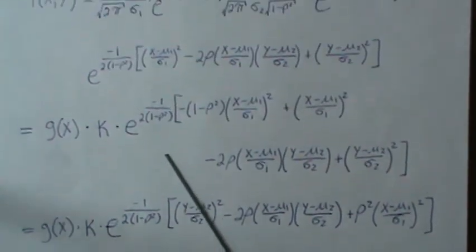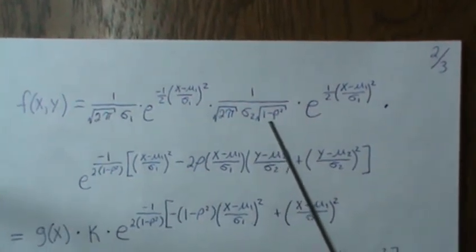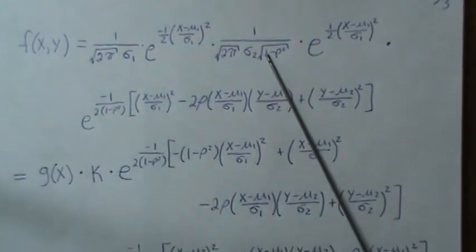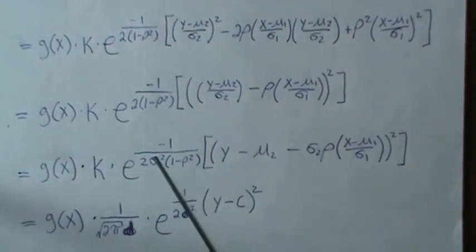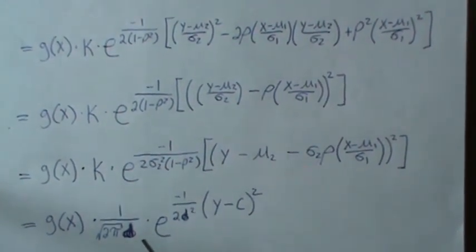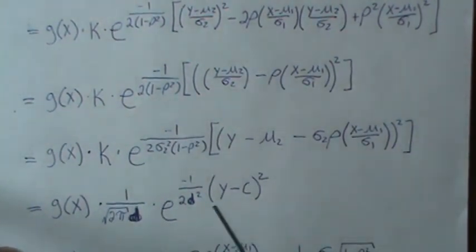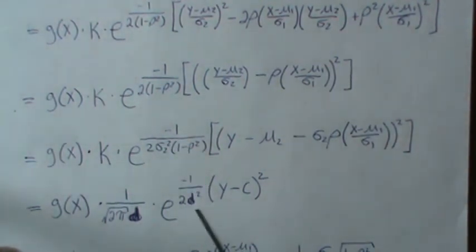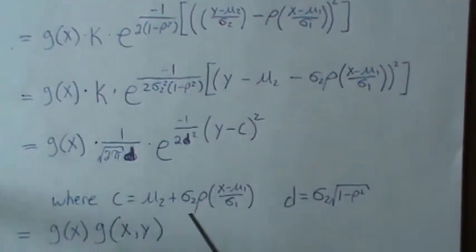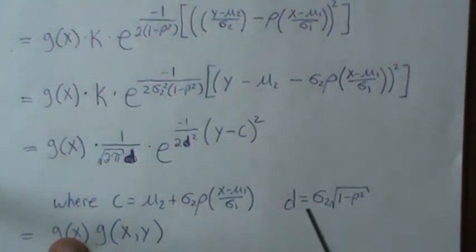Specifically, d equals sigma_2 times the square root of (1 minus rho squared), so d squared equals sigma_2 squared times (1 minus rho squared). Looking at the resulting formula — with numerator (y minus c) squared and denominator 2d squared — it is exactly the kernel of a normal distribution with mean c and variance d squared. There are no y's in the coefficient pieces, so everything outside is constant.